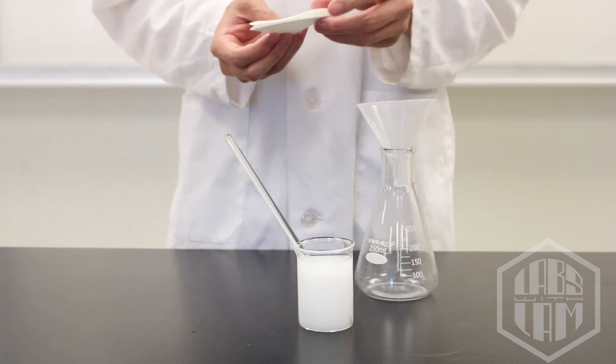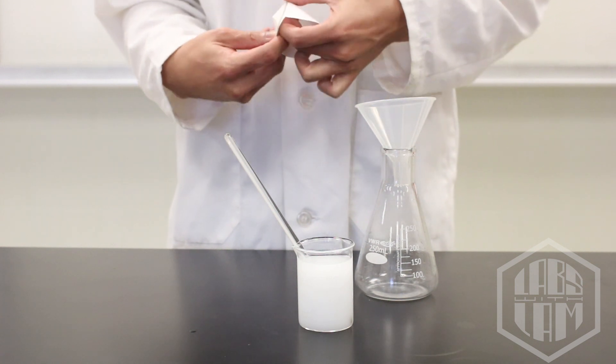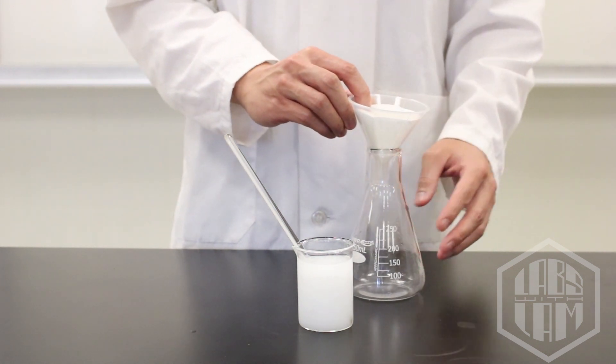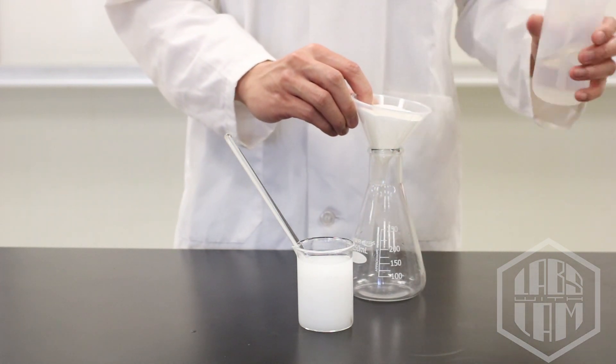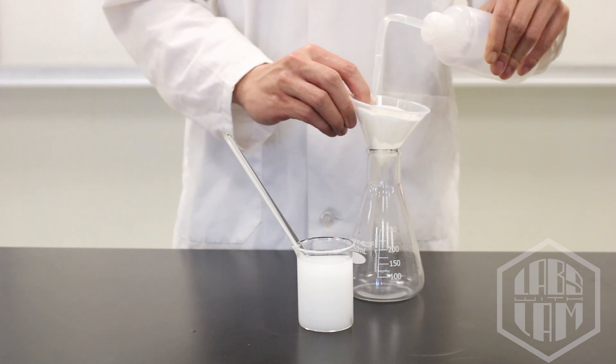Now to place it in the funnel, I'm going to find this little pocket, open it up, and I'm going to hold it down in the funnel. Now I'm going to use the wash bottle to wet the filter paper just a little bit, which will cause it to adhere to the funnel and stay where it is.